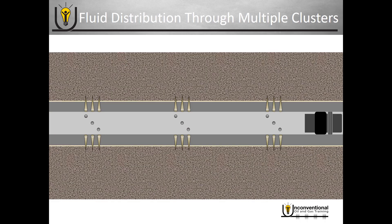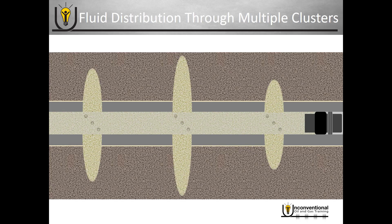Now in the cluster perforating module, we looked at fluid distribution through multiple clusters and some of the challenges they present. We also looked at techniques on the mechanical end to help get even fluid distribution, like limited entry. But even using these practices, it doesn't change the fact that these reservoirs are not homogeneous — there's going to be rock that's stronger and rock that's weaker. Ultimately, the formation is going to dictate how the frack grows and where the fluid will be distributed. So your frack job may end up looking something like this, because of the different strengths and weaknesses of the rock.